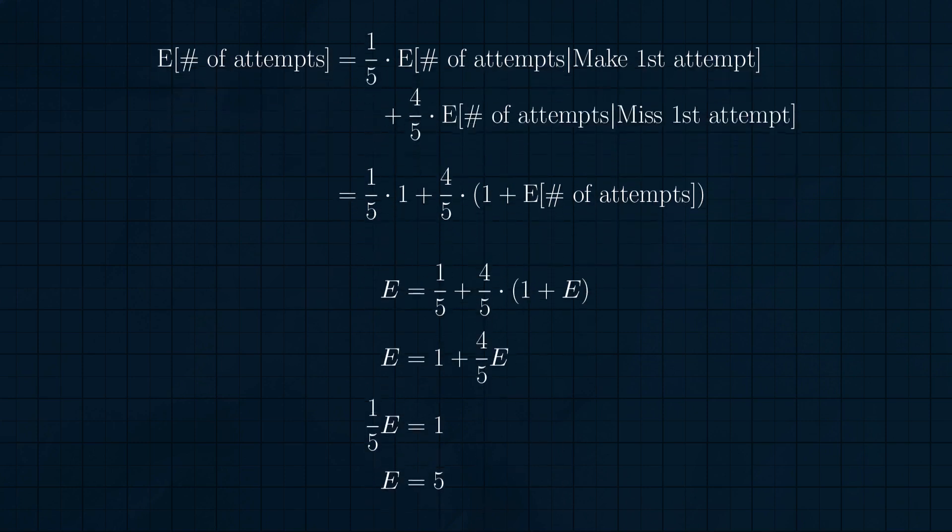e equals one-fifth times one plus four-fifths times one plus e. And we can solve this for e. e equals one-fifth plus four-fifths plus four-fifths times e. Or e over five equals one, or e equals five. Agreement with the formula. Nice!